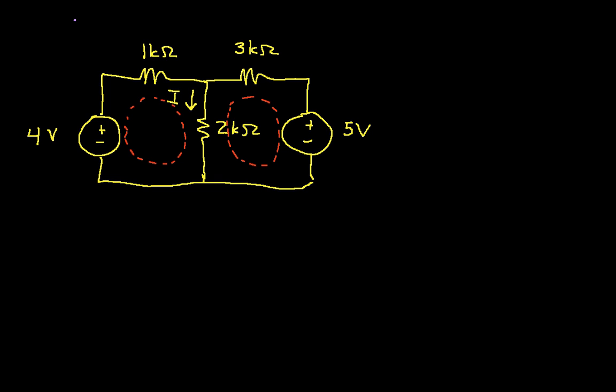Now, one thing you need to be careful of is that when you're defining a mesh, for example, the components of this first mesh on the left would be the 4 volt source, the 1k ohm resistor, and the 2k ohm resistor, you need to make sure that everything is connected. I can't have wires crossing over each other without being connected when I'm defining meshes.